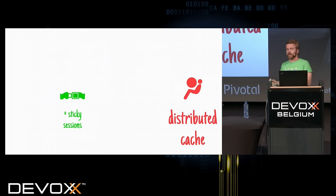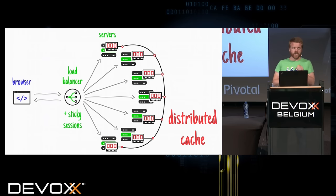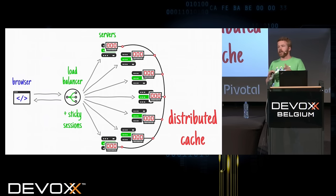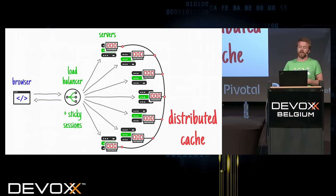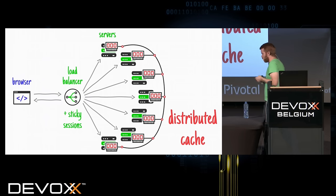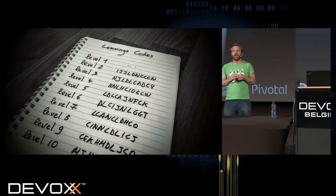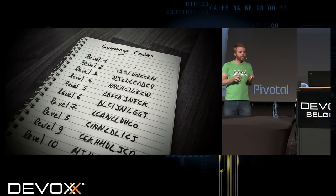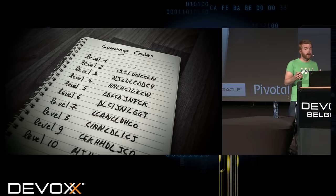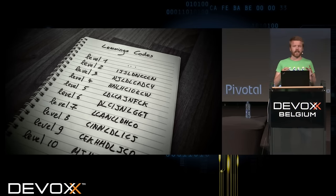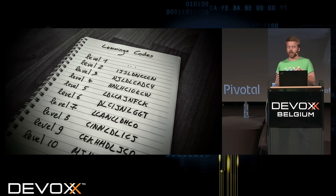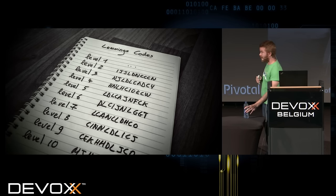Nothing prevents you — depending on budget — from using a load balancer with sticky sessions AND a distributed cache, a bit like having a seatbelt and an airbag. You're many in the room. Each one has a different context, a different team, different skills and budget. But I can't help thinking that if we were to manage state on the client side, maybe it could be simpler. And that's where the IETF — the Internet Engineering Task Force — gives us RFC 7519.